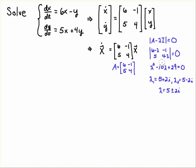So the matrix in this case A is [6, -1; 5, 4] and if we go through and find the eigenvalues we see that we get lambda 1 is 5 plus 2i, lambda 2 is 5 minus 2i.